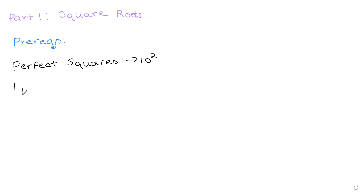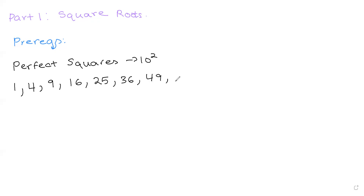1 squared is equal to 1, 2 squared is equal to 4, 3 squared is equal to 9, 4 squared is equal to 16, 5 squared is equal to 25, 6 squared is equal to 36, 7 squared is equal to 49, 8 squared is equal to 64, 9 squared is equal to 81, and finally 10 squared is equal to 100. These are the basic perfect squares you need to know.